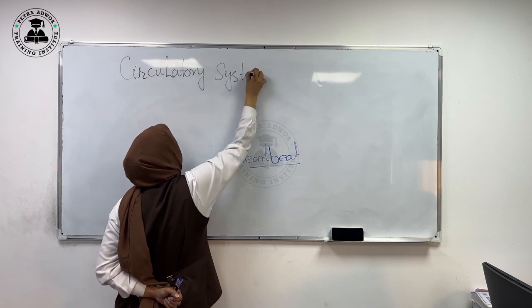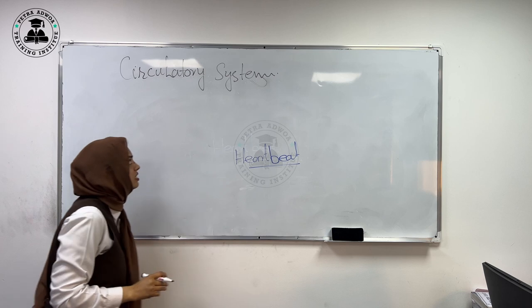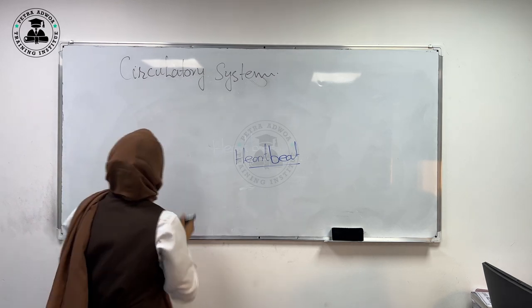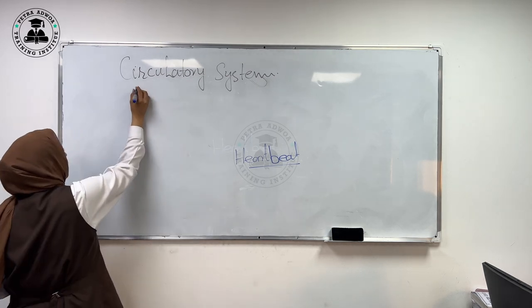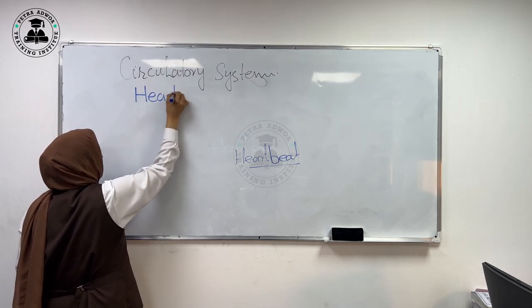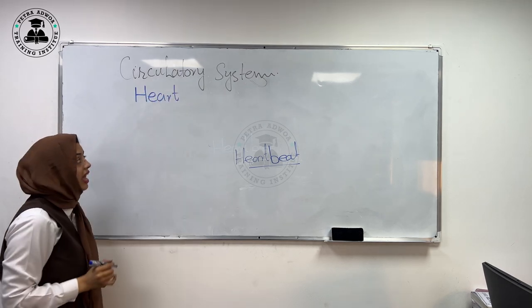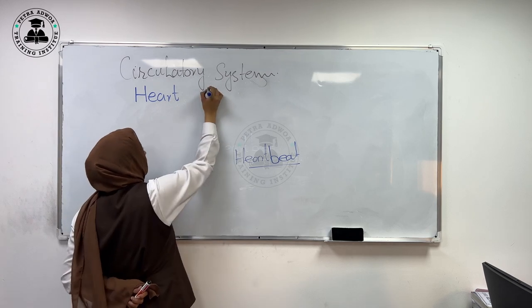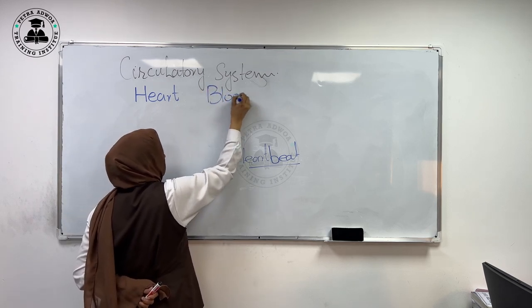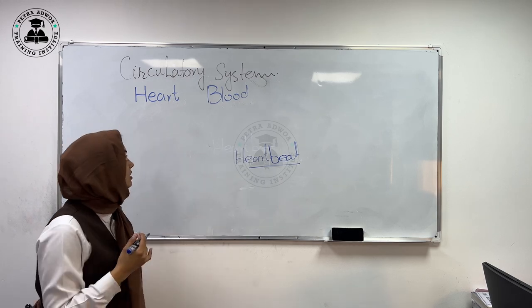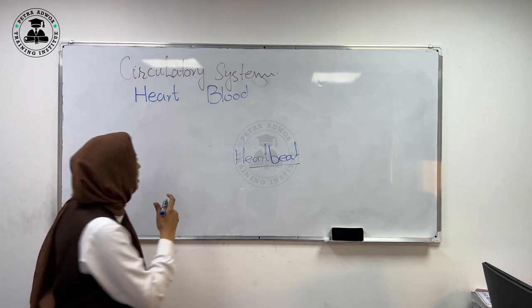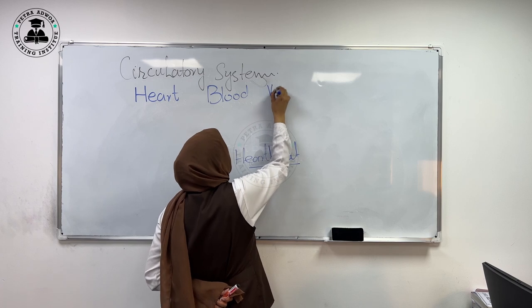The circulatory system of the human body consists of three main things: the first is the heart, the second is blood, and the third is vessels.